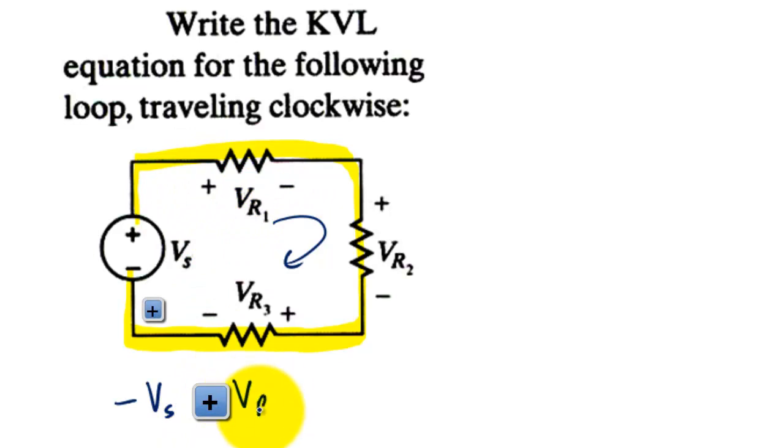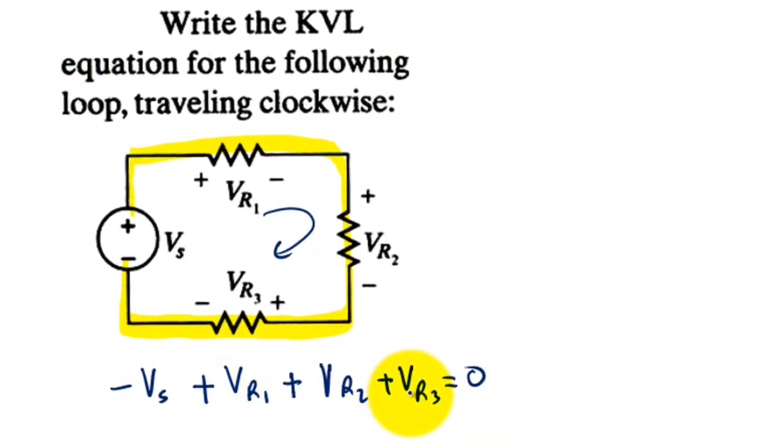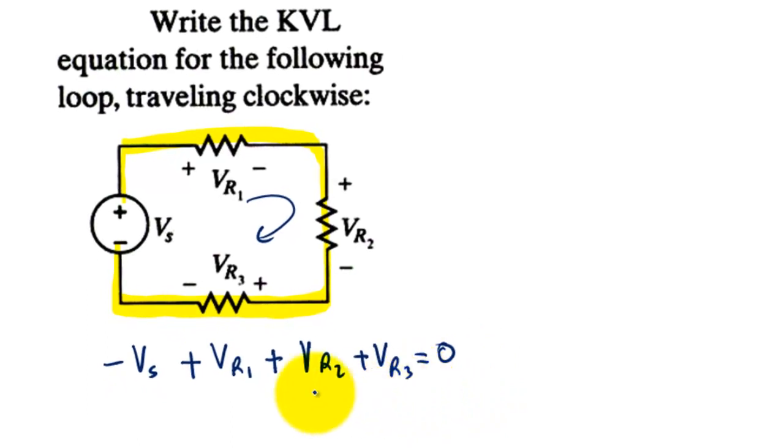The voltage VR1: positive charge is moving high to low, so it's a drop. The drop is always positive. So plus VR2, it's a drop. Plus VR3, and this algebraic sum, meaning negative or positive voltage, is equal to zero.